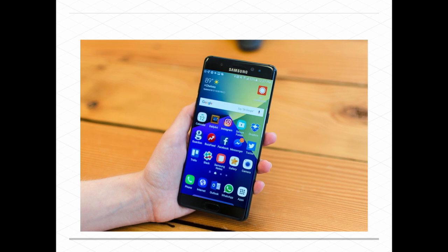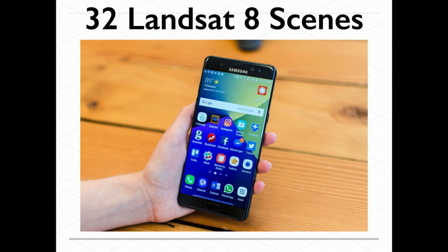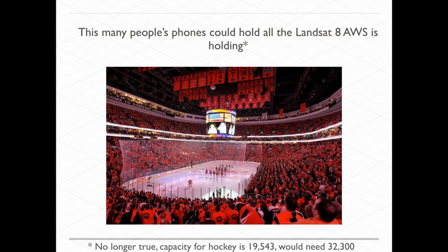To visualize that much data, I use an analogy. Cell phones hold about 64 gigabytes — dedicated solely to Landsat, that's roughly 32 scenes per phone. I used to say this is how many people it would take to hold this data. A stadium packed full of people with phones holds about 20,000 people — that's the Wells Fargo Center where the Philadelphia Flyers play. A stadium full of fans with phones holding 32 Landsat scenes each — that's the scale we're talking about.